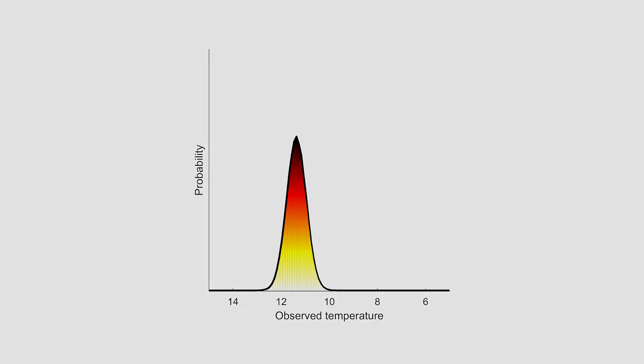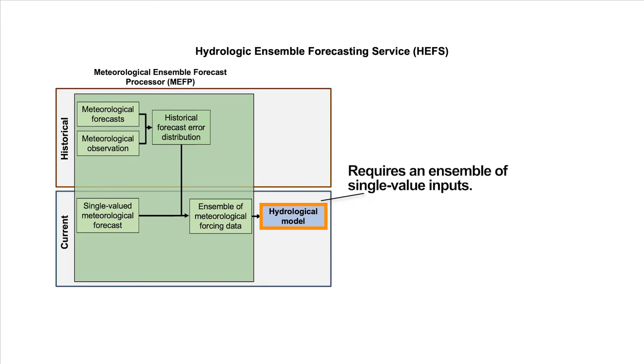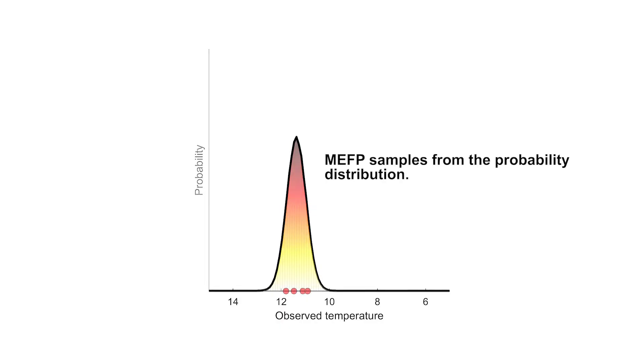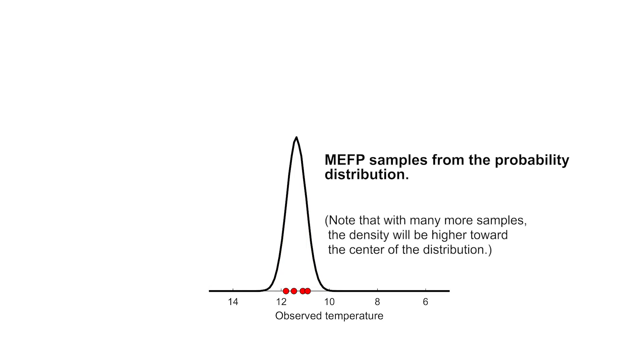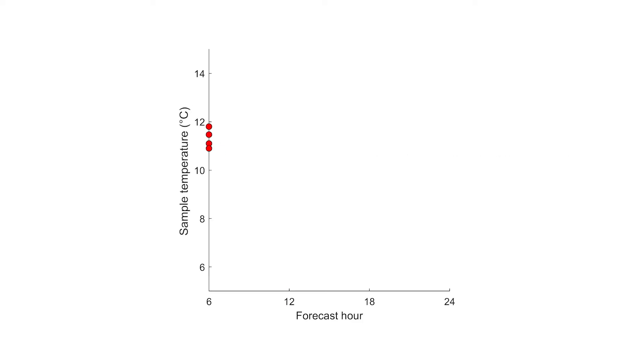However, the hydrological model requires an ensemble of single-valued inputs rather than probability distributions. The MEFP provides these single values by sampling them from the probability distribution. Here, we've sampled only four temperatures from this distribution. Keep in mind that HEFS typically samples dozens of temperatures. The process of generating and sampling from a unique probability distribution is repeated for each lead time in the forecast.